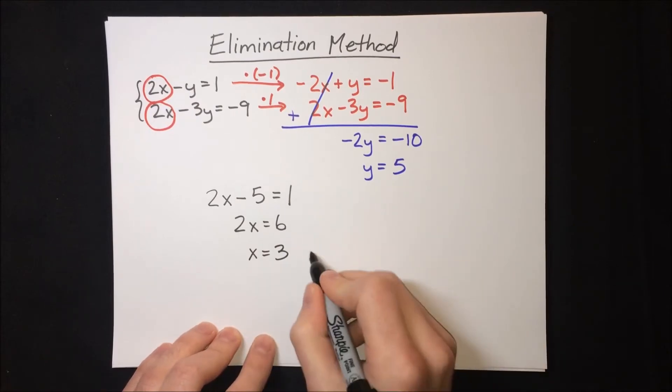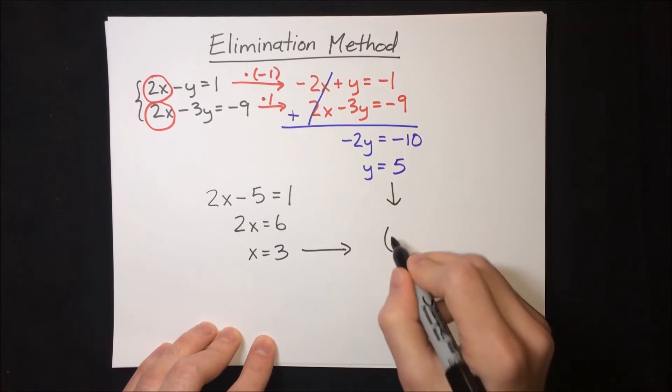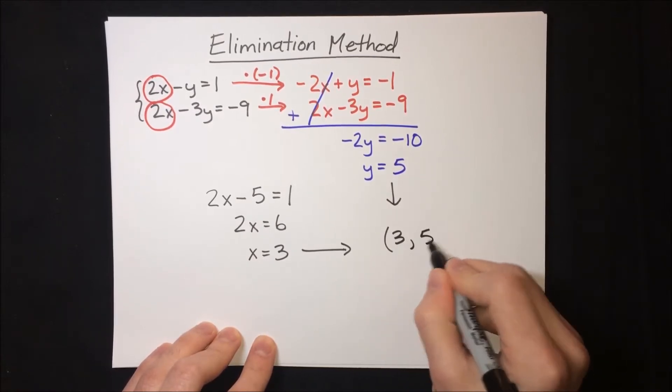And there we have it. Putting these solutions together, we find that the total solution of the system is 3, 5.